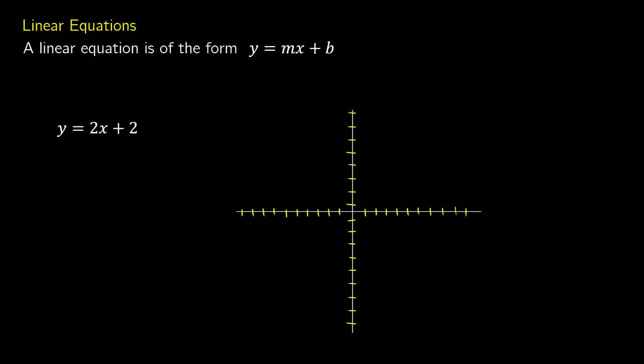A linear equation is any equation where you have the form y equals mx plus b. There are a few things that each of these represent. x and y are just your values that go into a graph. m is what's called the slope of a line,